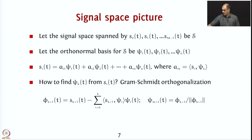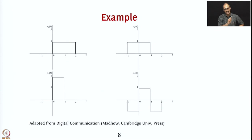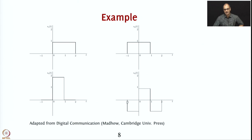Let us do this for a specific example. We have four signals: S₁(t), S₂(t), S₃(t), S₄(t). S₁(t) is 1 from 0 to 2 seconds. S₂(t) is 1 from -1 to 1 second. S₃(t) is 2 from 0 to 1 second. S₄(t) is -1 from -1 to 0, 1 from 0 to 1, and -1 from 1 to 2.